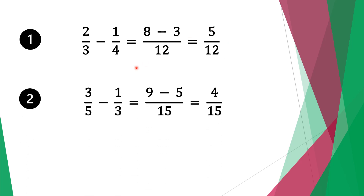Moving on to question two, we have three-fifths minus one-third. Again we have different denominators, so we multiply five by three to get fifteen. Fifteen is a common factor for five and three. Fifteen divided by five is three, three times three is nine.